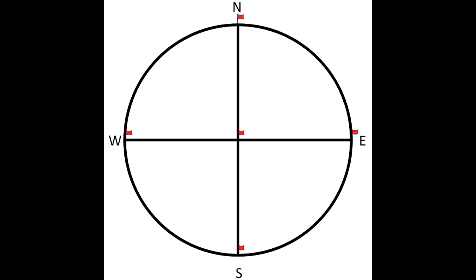Pin flags are placed at the four cardinal directions as well as plot center for temporary monumentation. Plots are oriented based on the quadrants, and trees are always labeled in a clockwise fashion from north.